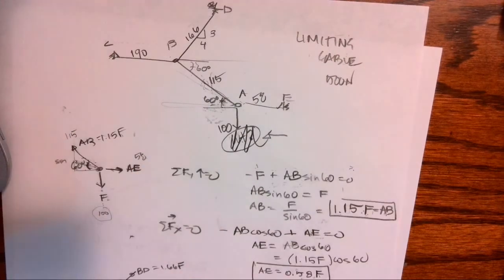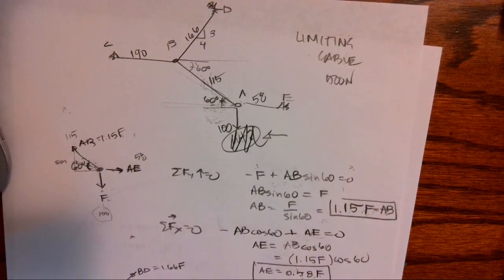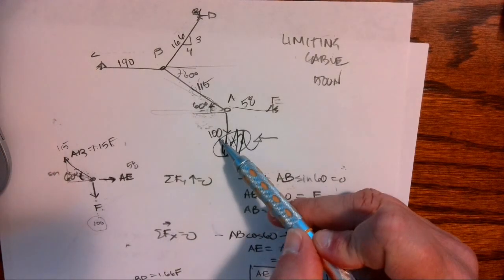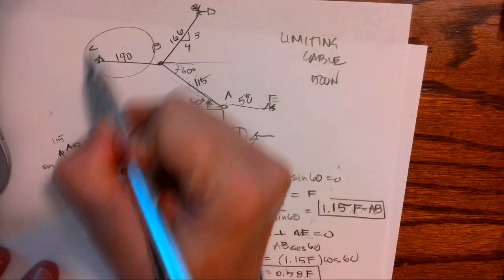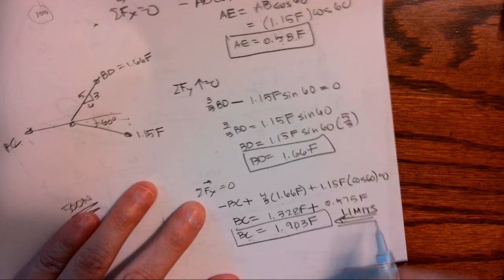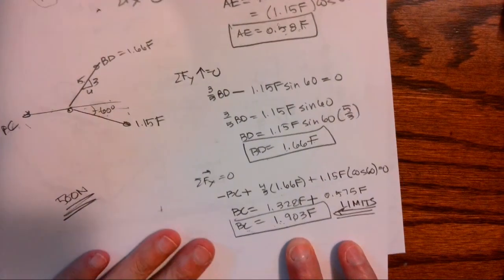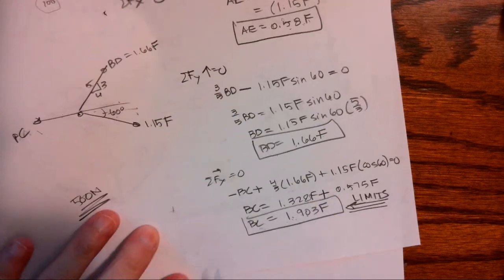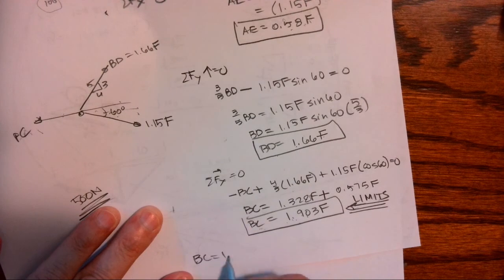Okay, so which cable is carrying the most load of this hundred pound chandelier? We can clearly see it's BC. So we call BC, that is our limiting cable. That's the one we have to design for because it's carrying proportionally the largest amount of that load.